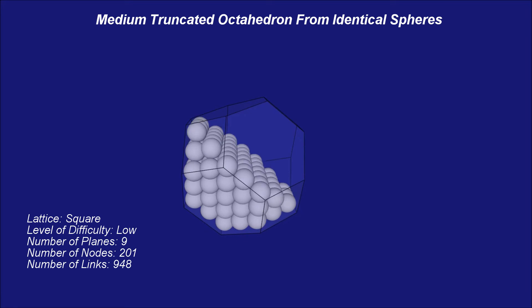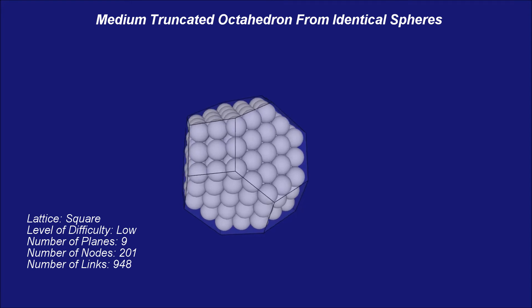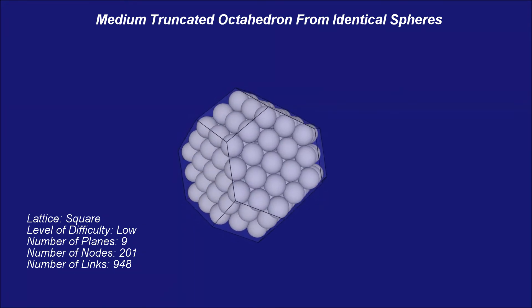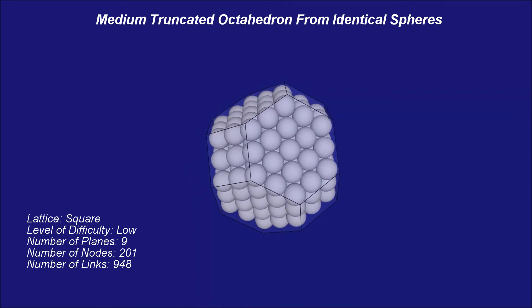Looks like the quantization of space is inherited in our initial assumption. The points in space are distributed following the close packing of sphere arrangement.